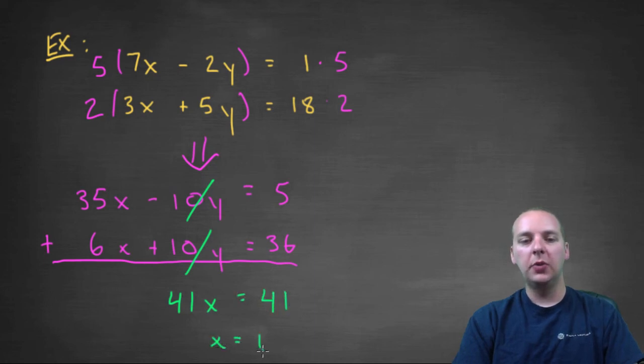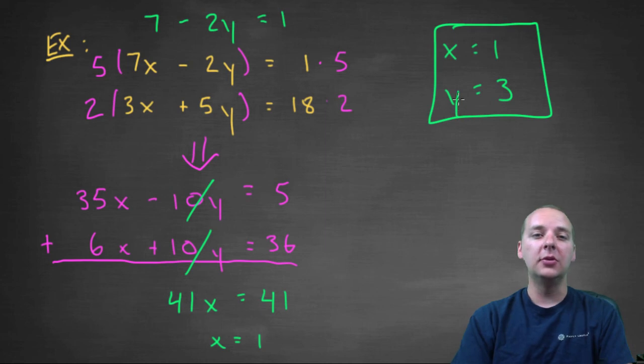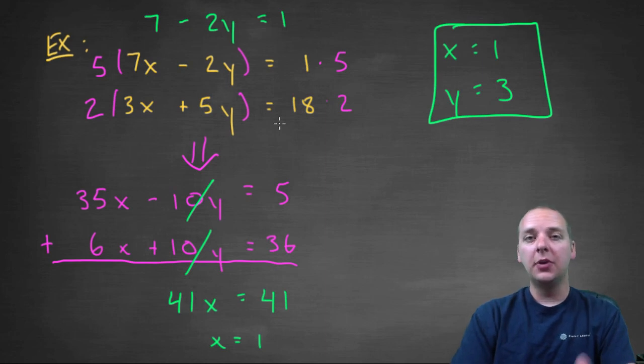You would get 35x and 6x make 41x equal to 41. So x would be 1. And then use that x to go find the corresponding y that goes with it. I would just use the first equation maybe. 7 - 2y = 1. So you can solve that. I think that would reduce down to y being 3. So you can check my algebra on that. But that would be the solution to this system. So hopefully those examples help you better understand how to solve systems of equations using different methods.